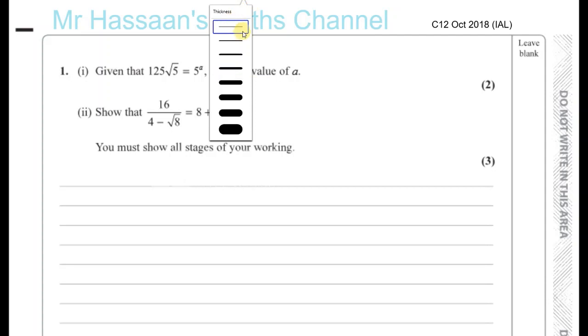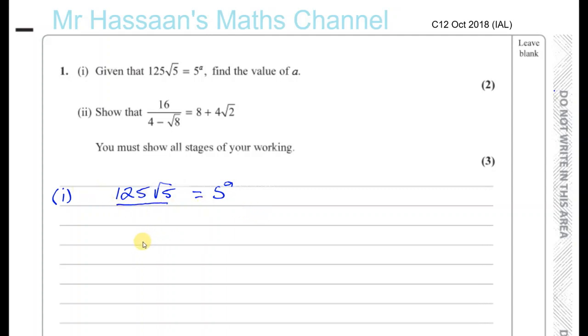Here we have question one, part one. It says given that 125 times the square root of five is equal to five to the power of A, find the value of A. So basically what they want us to do is to express all of this as five to the power of something. We want to have it's like an exponential equation. So you want to express them both with the same base. And if the bases are the same, the powers will therefore be the same.